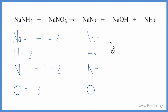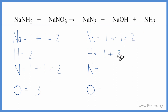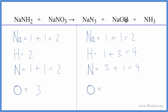On the product side, we have one sodium plus this one sodium here, so that gives us two of those. Hydrogen: we have one plus three here, so we have four hydrogen atoms. Nitrogen: we have three plus the one here, that gives us four. And it looks like we just have one oxygen atom. I like to leave the oxygens to last — that usually seems to work pretty well.